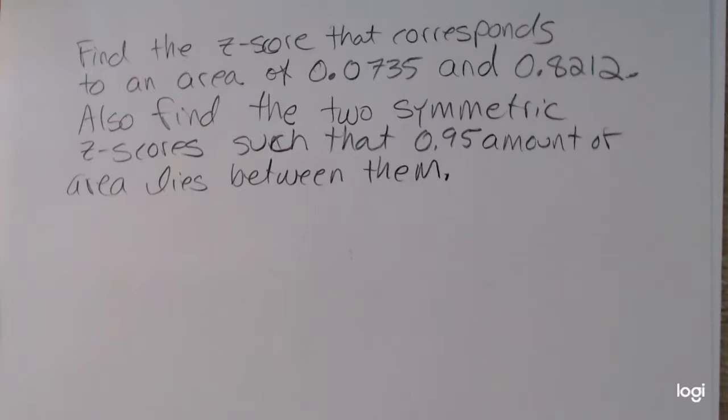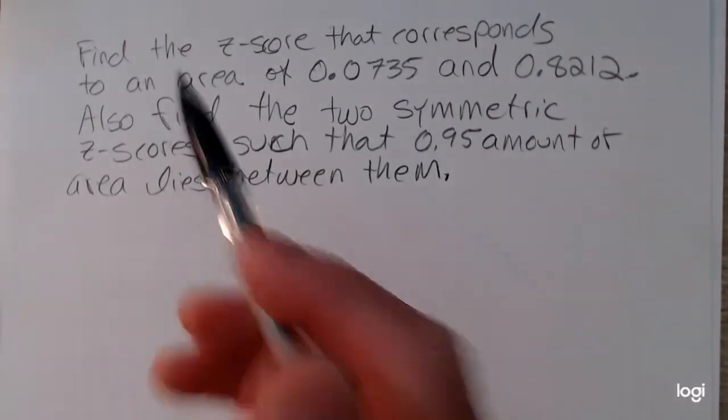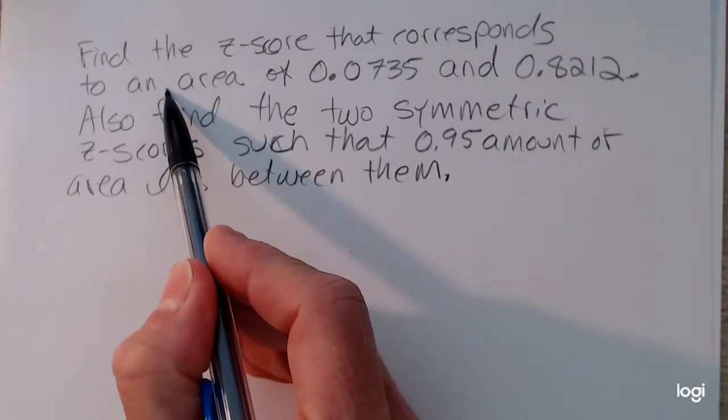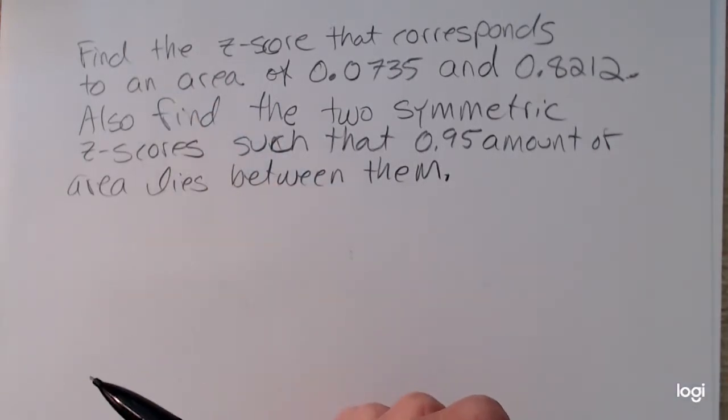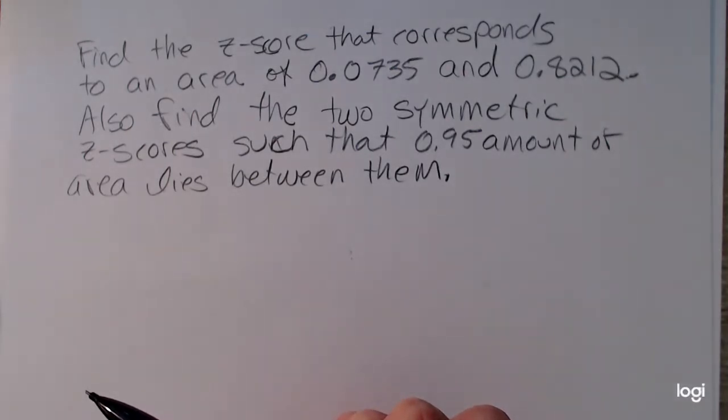So I want to find the z-score that corresponds to a cumulative area of 0.0735 and also 0.8212. And then I also want to find the two symmetric z-scores such that 0.95 amount of area lies between them.